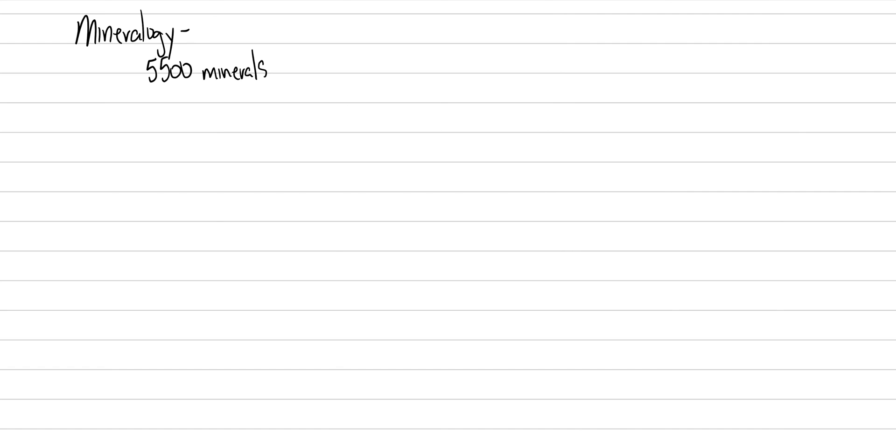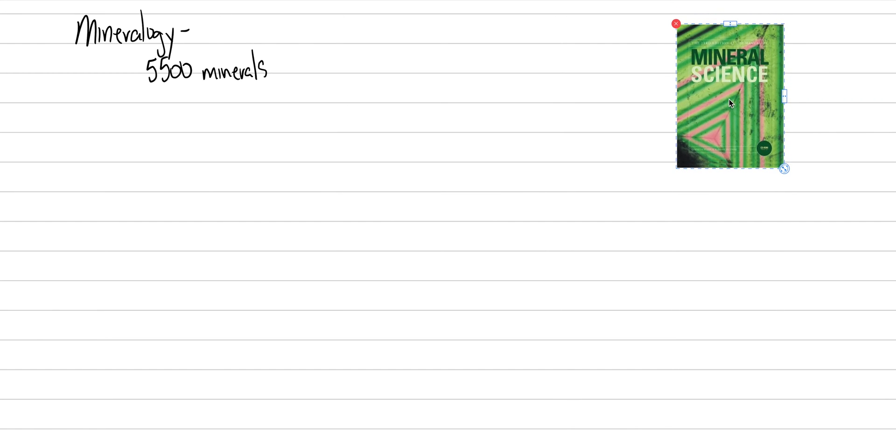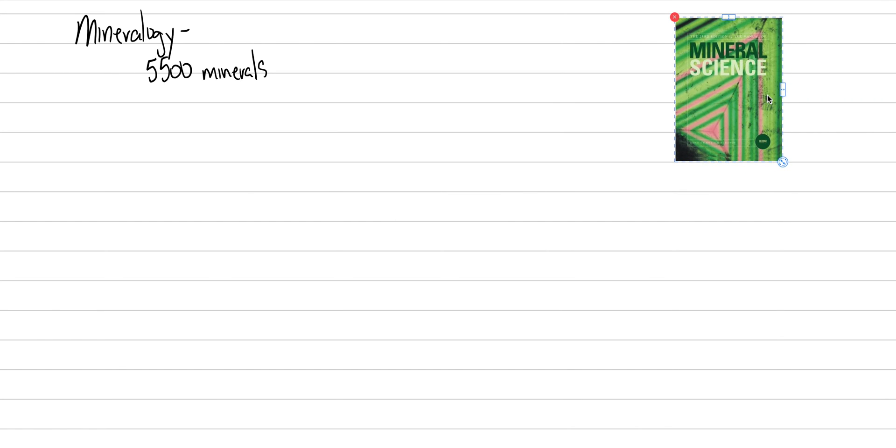The textbook that we're going to use for this class is called Manual to Mineral Science. It's a great book that's been around for over 100 years in a variety of different editions. You can use this 23rd edition and track along with the different page numbers that I provide or you can get one of the older versions and fend for yourself on page numbers.